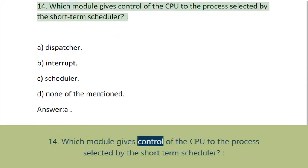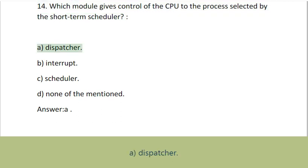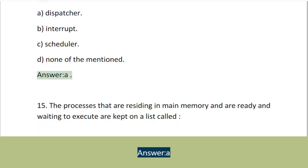Question 14: Which module gives control of the CPU to the process selected by the short-term scheduler? A. Dispatcher, B. Interrupt, C. Scheduler, D. None of the mentioned. Answer: A.